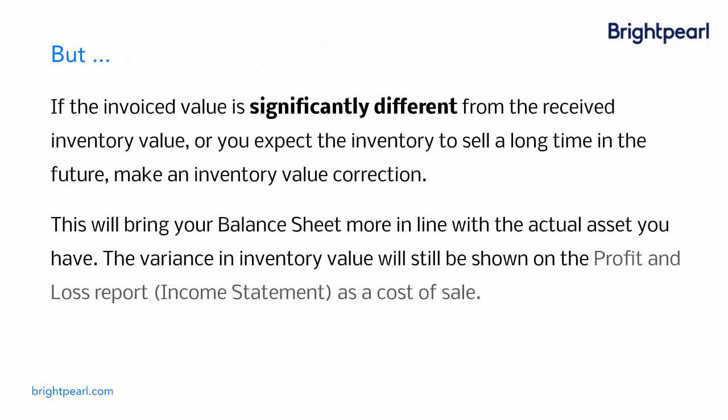If the invoiced value of goods on the purchase invoice is significantly different from the received inventory value, or you expect the inventory to sell a long time in the future — perhaps after a year-end report — then it's a good idea to make an inventory value correction now. This will bring your balance sheet more in line with the actual asset you have, and the variance in inventory value will still be shown on the profit and loss report as a cost of sale.